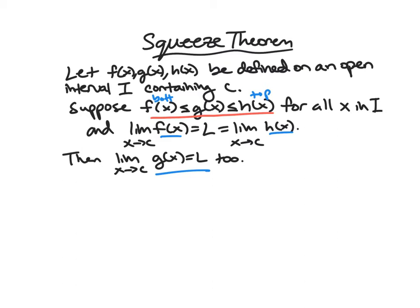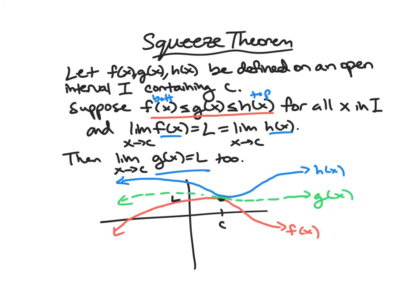So we want to draw a picture here to get more of a sense of what's going on. So here we can see our bottom function in red, f, our top function in blue, h. And they kind of collide at this point c, and have the same limit l there. And we can kind of see, if we have a function that's always between them, then if they're going to meet there, the only way to squeeze through is to also have the limit l at that point.